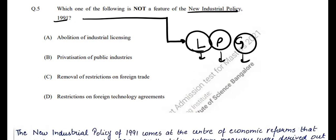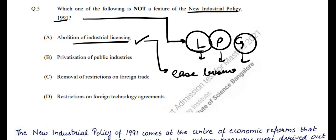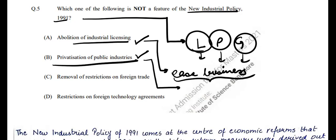Now, looking at the features of the New Industrial Policy: abolition of industrial licensing is indeed a feature, because the number of licenses required to start a business was reduced to ease the way business is conducted. The second feature was privatization of public industries — this was done because many public sector units were unproductive.